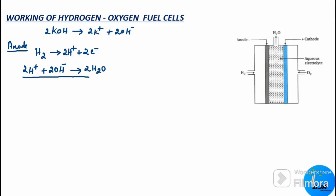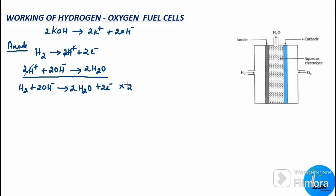Writing the overall anodic reaction: cancelling the 2H⁺ ions common on both sides, we get H₂ + 2OH⁻ → 2H₂O + 2e⁻. Multiplying the whole equation by 2, the overall anodic reaction becomes: 2H₂ + 4OH⁻ → 4H₂O + 4e⁻.